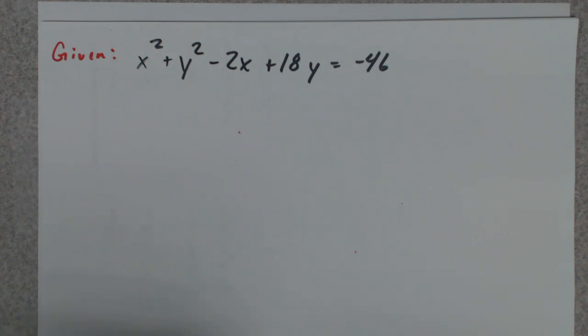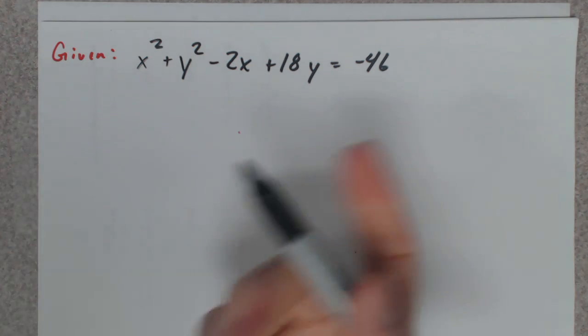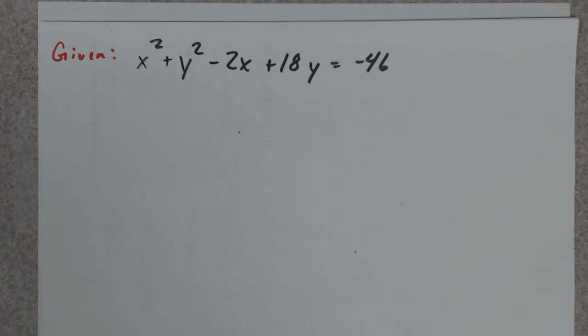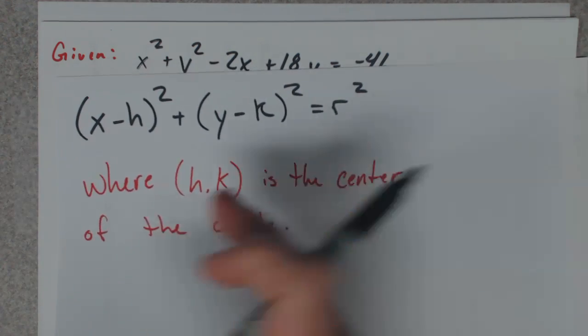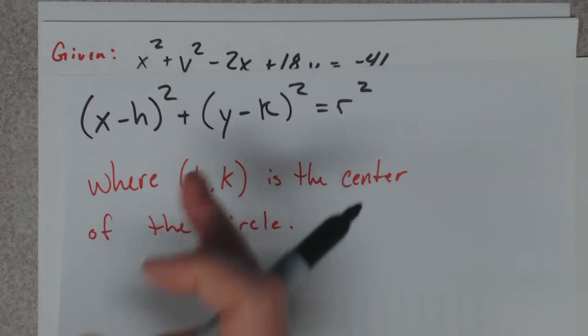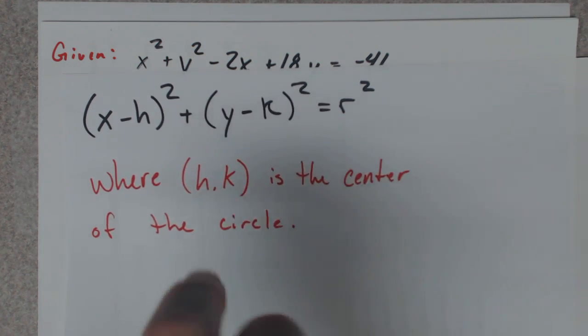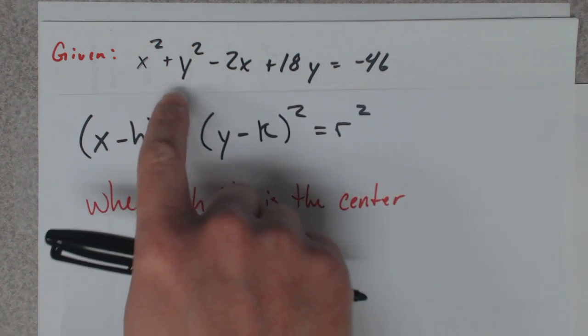You're given this equation, which is actually a circle equation. You want to find its center and radius. To do that, you need to rewrite this in standard form. Remember, the standard form equation of a circle looks like this. So we need to rewrite this to get it into this form.